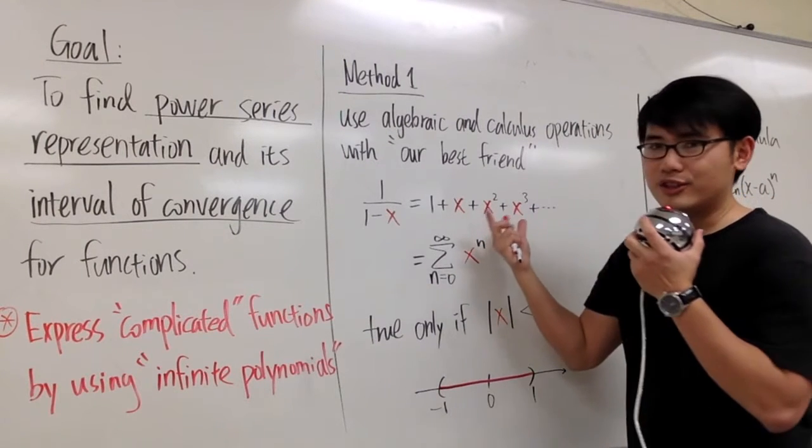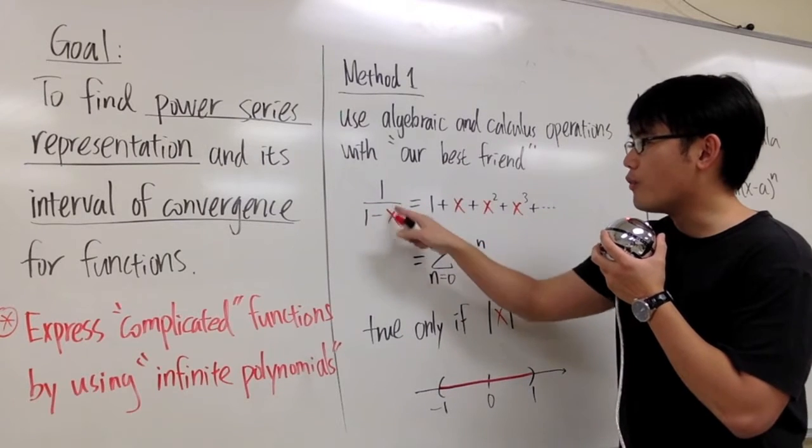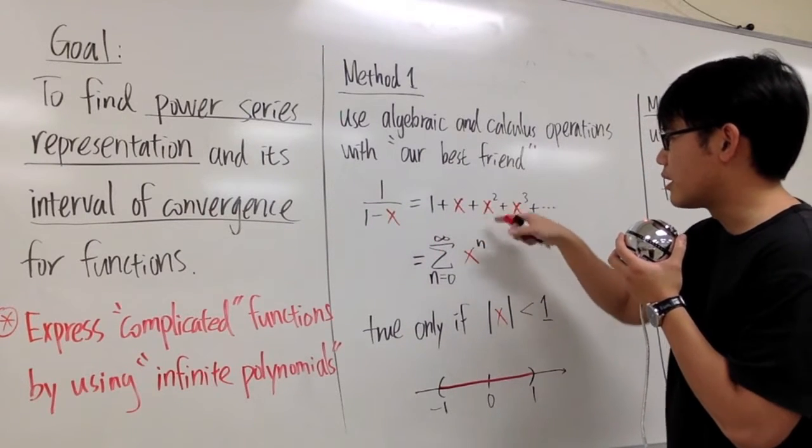And this pretty much came from the geometric series, the 1 over 1 minus r, hence the 1 plus r plus r squared and so on.